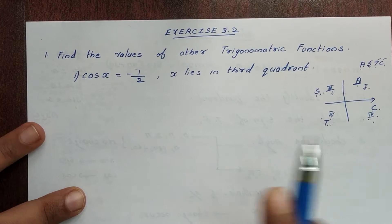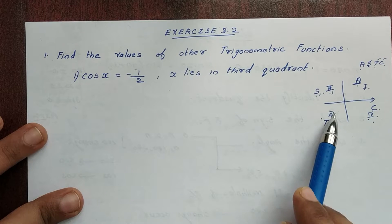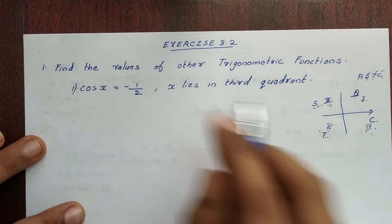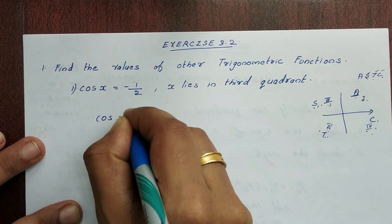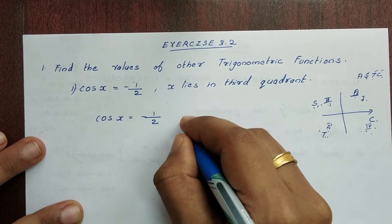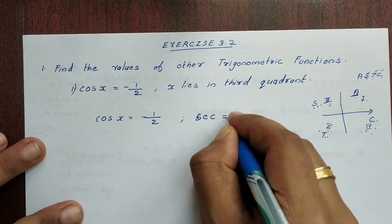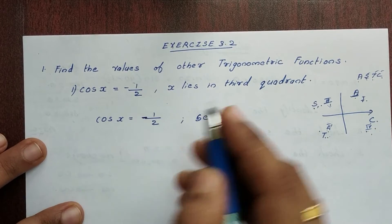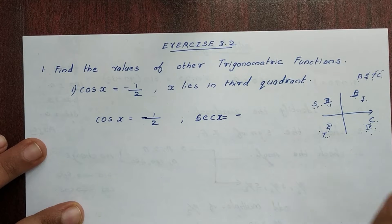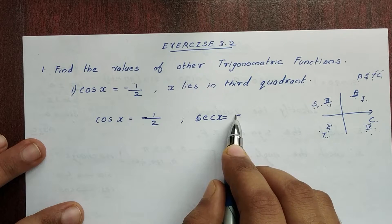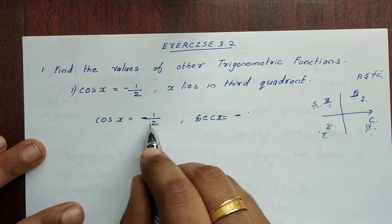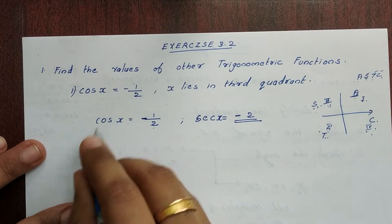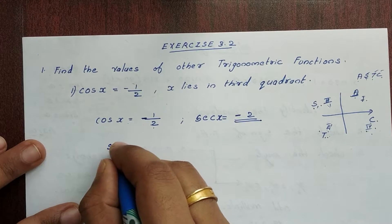Given cos x is equal to minus 1 by 2. We know that sec x is the reciprocal of cos x. So sec x is equal to 1 divided by cos x, which is minus 2. Now, what is sin x?